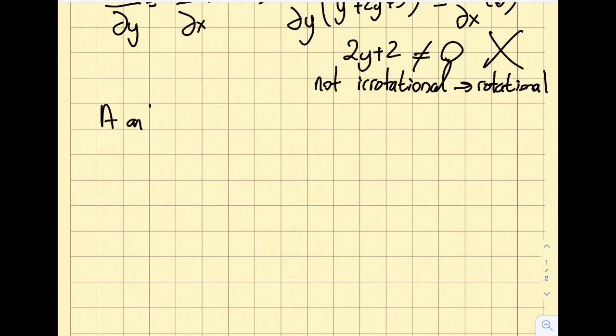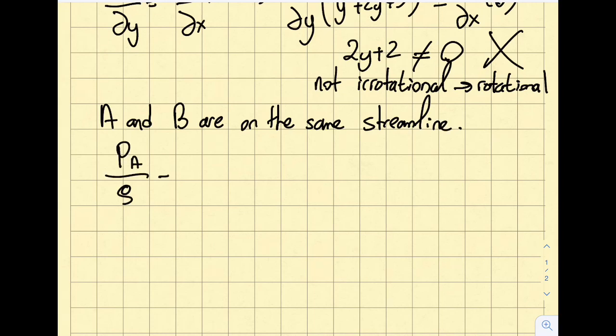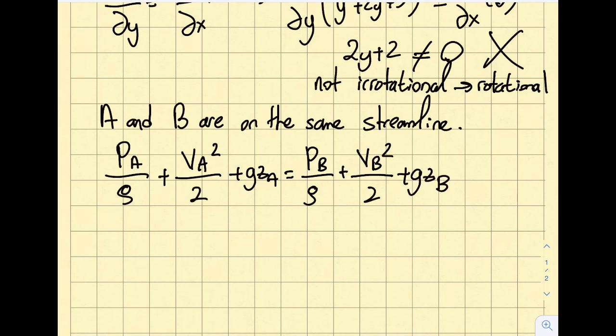A and b are on the same streamline. So I can simply write pa over rho plus, rho is constant, va squared over 2 plus g za will be equal to pb over rho plus vb squared over 2 plus g zb. Right off the bat, I want to just get rid of the z terms, because the elevation doesn't change over there.